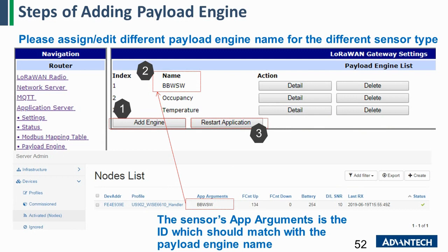The first step is you need to add an engine. Each engine will have one name, and the name needs to match the app argument in your network server setting. It depends on the app argument to help you create the engine.